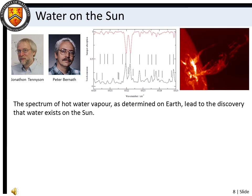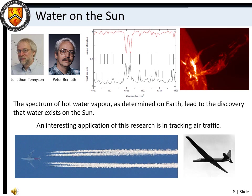To determine the chemical composition of distant astronomical bodies, we must first measure the spectra of chemicals under controlled laboratory conditions, then examine the spectrum of our star or nebula of interest to see if those chemicals are present. Usually this Earth-based research also involves a healthy dose of spectroscopic theory, since this allows us to test and refine existing physical models, and make predictions about unobserved phenomena. A nice example occurred between scientists at the University of Waterloo and University College London, when they discovered that water exists on the sun. The high temperature water spectra observed in the solar atmosphere are also observed when monitoring emissions from jet engines, and this research had an unforeseen spin-off application in tracking air traffic.